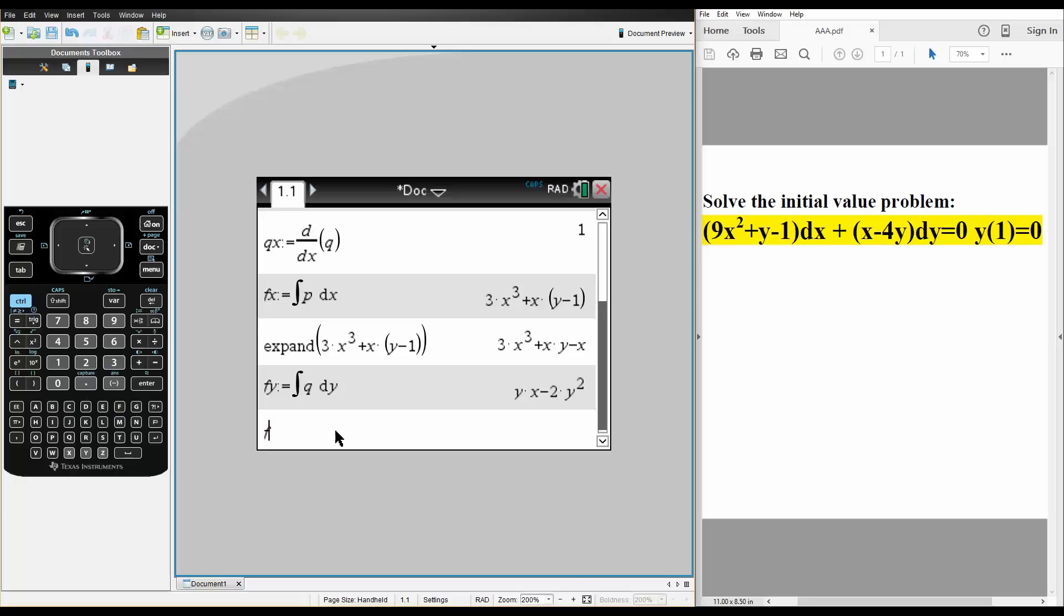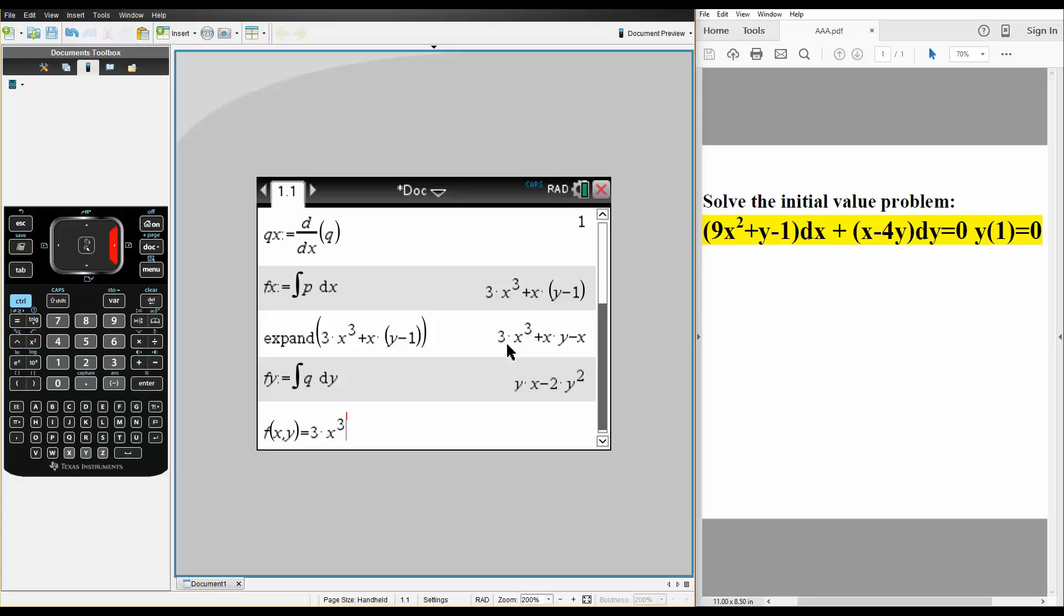So now we can say F(x, y) is equal to 3x cubed. So, 3 times x cubed plus x times y minus x. And in the next step, we have y times x. Y times x is equivalent to x times y. We're only writing the unique terms from both of these answers. So, we don't write y times x. So, we write minus 2 times y squared.